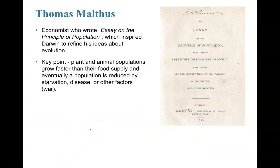Now enter Thomas Malthus — an economist who paved the way for Darwin to develop and refine his ideas about evolution. Thomas Malthus wrote the 'Essay on the Principle of Population.' The key point of this essay was that plant and animal populations grow faster than their food supply.